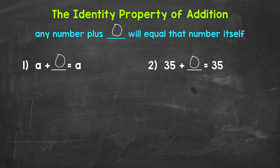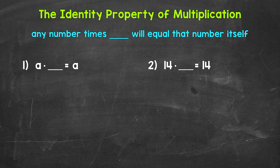Let's move on to the identity property of multiplication. As far as the identity property of multiplication, we need to think: what can we multiply any number by to equal that number itself? Well, any number times one will equal that number itself, and it's as simple as that.